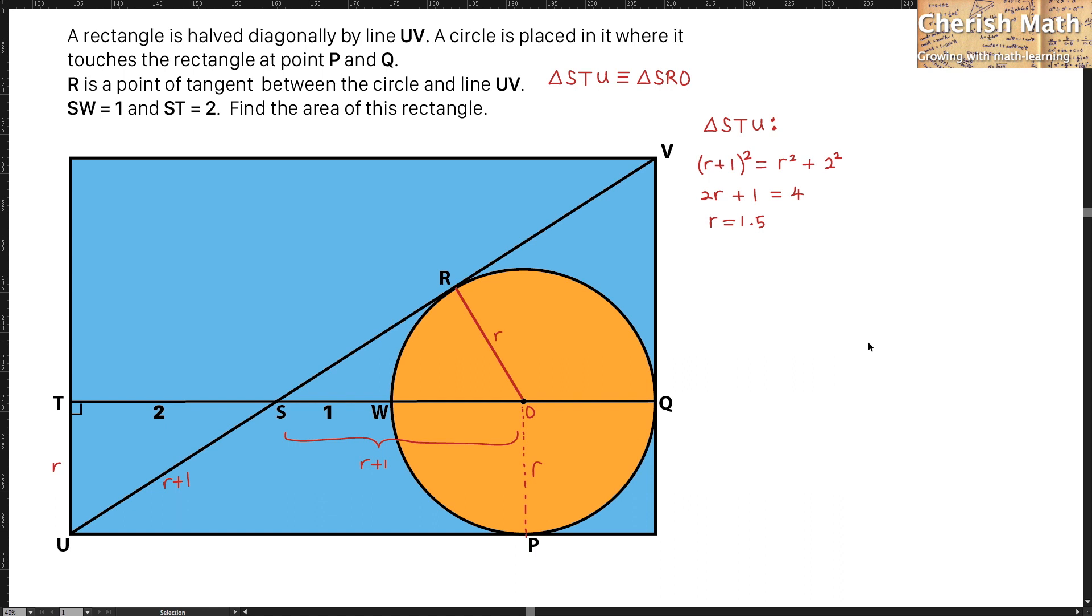For next, I'm going to work out what is the length of VQ by using the concept of similarity. I know that triangle STU is similar with the triangle SQV. By using the similarity, I'm going to work out the ratio of SQ divided by ST. This is the scale factor that I'm going to get by using 4 divided by 2. This same scale factor is going to apply on the length of VQ divided by TU.